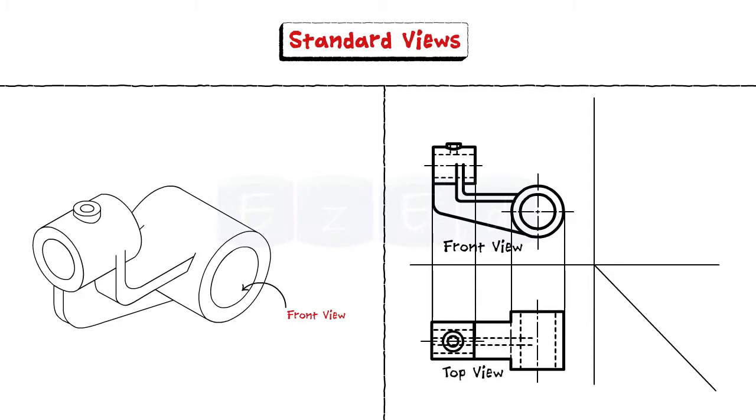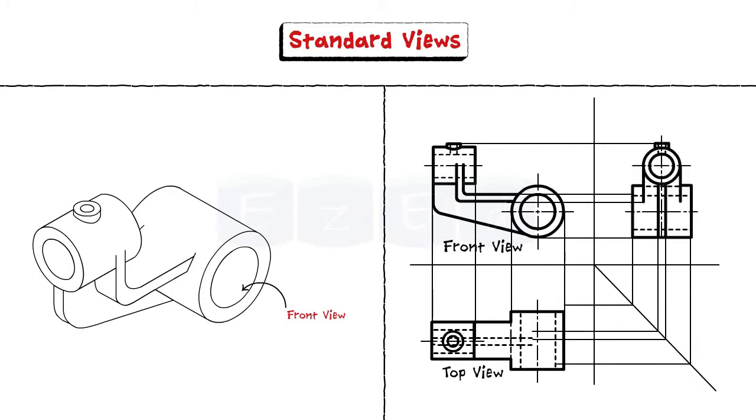The top view is then aligned vertically to the front view and they share the same length dimension. The side view is then aligned horizontally to the front view and they share the same height dimension.